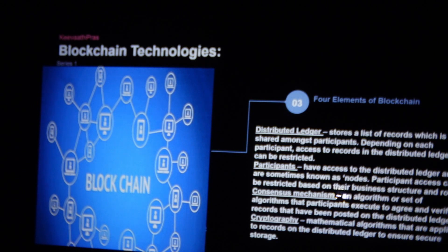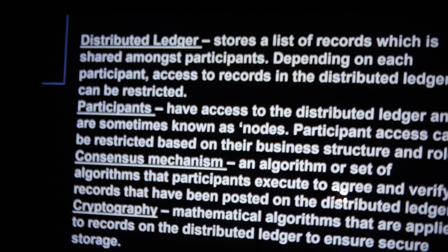What are the four main elements of blockchain? It's a distributed ledger; you have participants; you have a consensus mechanism; and there's cryptography. Cryptography is basically a mathematical algorithm that is applied to all the records.